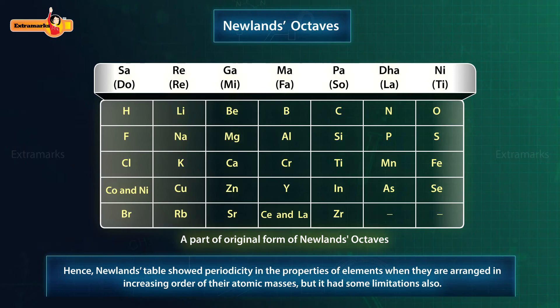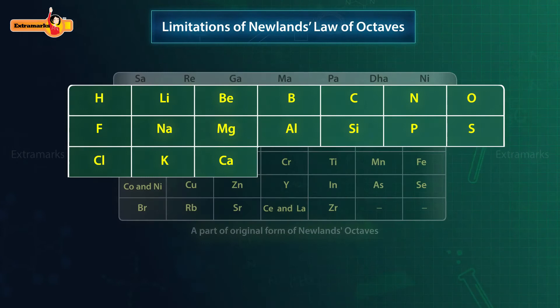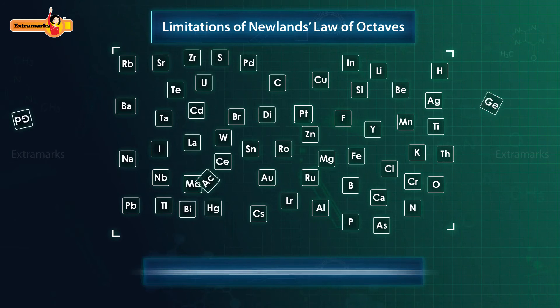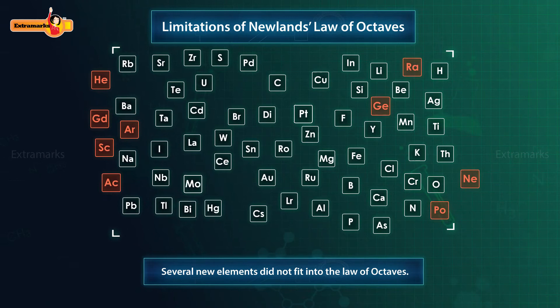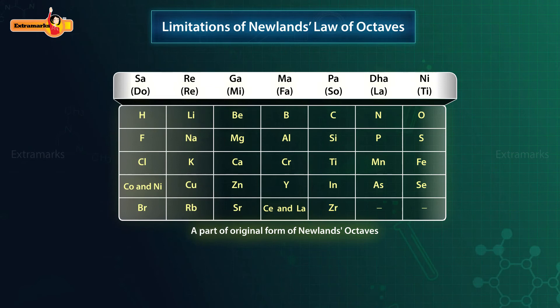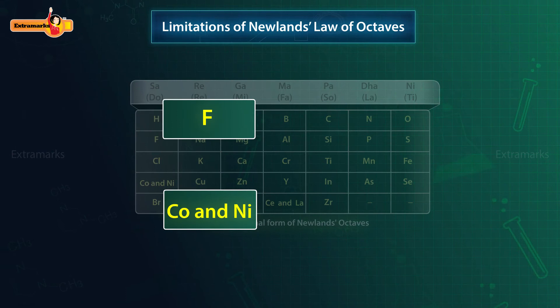But it had some limitations also. For example, the law was applicable only up to calcium. Newland assumed that only 56 elements existed in nature and no more elements would be discovered in the future. But later on, several new elements were discovered whose properties did not fit into the Law of Octaves. Therefore, he adjusted two elements in the same slot to fit elements in his table. He also put some unlike elements under the same node. Notice that Cobalt and Nickel are placed in the same slot and are placed in the same column as Fluorine, Chlorine and Bromine, which have very different properties.